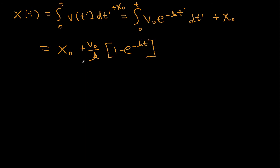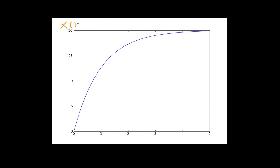This gives a function that starts at x₀ and asymptotically approaches v₀/k — which in this case is 20 — as time goes on. So x(t) is an increasing function that levels off exponentially. That's x(t). The last thing we'll find is v as a function of x.